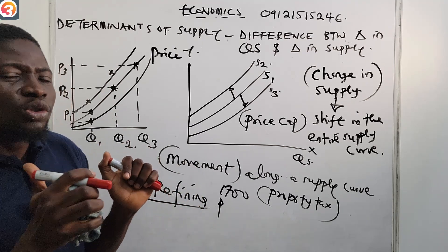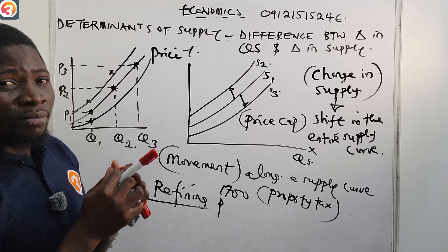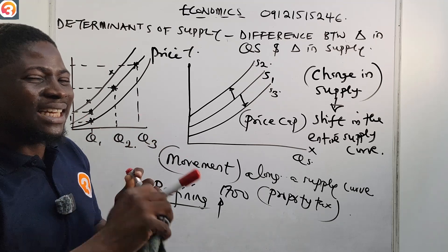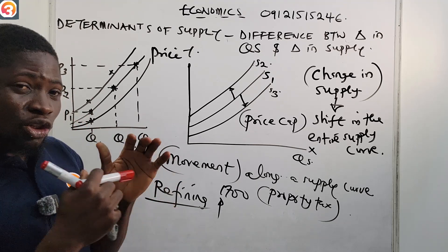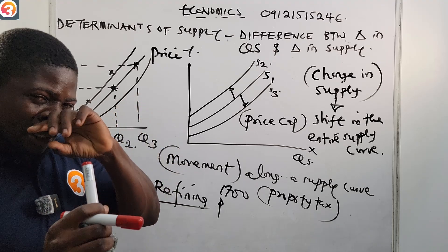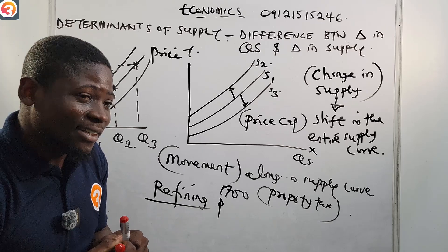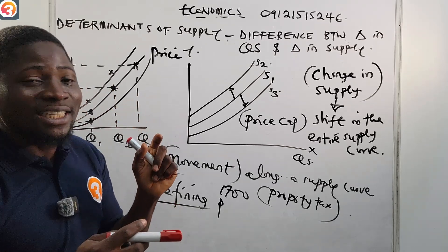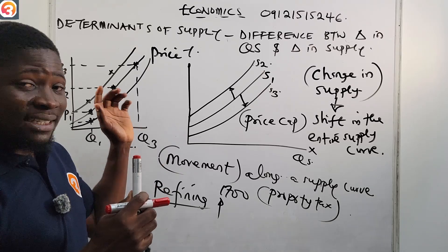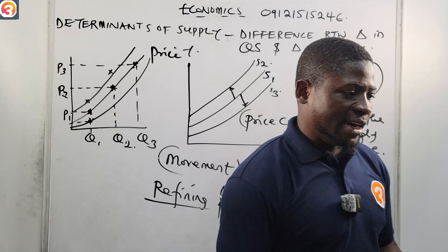The simple rule is: if the factor affecting supply is anything other than price, it will lead to a shift in the entire supply curve — that is change in supply. But if only price is affected, it leads to a movement along the supply curve — that is change in quantity supplied.